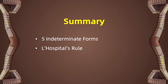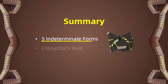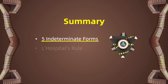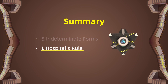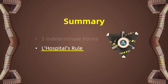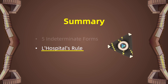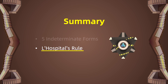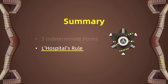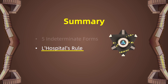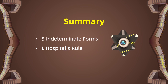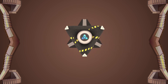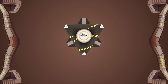In summary, in today's video we introduced five types of indeterminate forms and how to use L'Hôpital's rule to solve them. The first two types — 0 over 0 and infinity over infinity — can apply L'Hôpital's rule directly, but the other types need some variations and tricks to convert them into those first two types. That's all for our video today — thank you for watching!